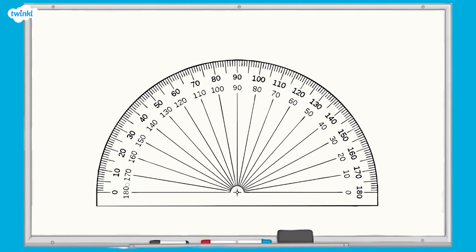We use the unit degrees to measure angles. These are marked on two scales on the protractor. The outside scale goes from 0 to 180 degrees and the inside scale goes from 180 to 0 degrees.